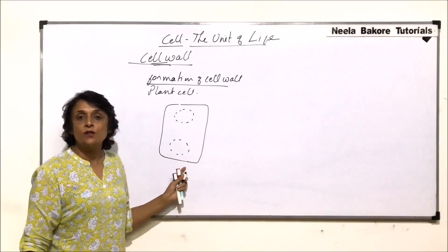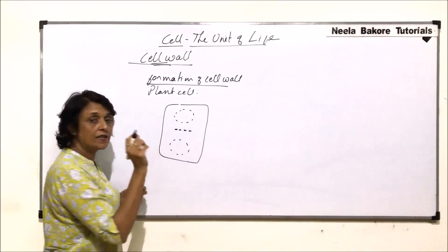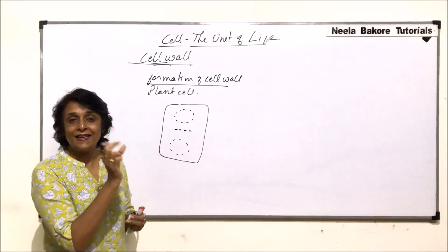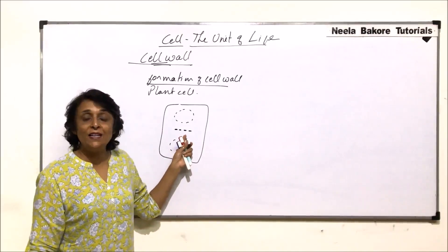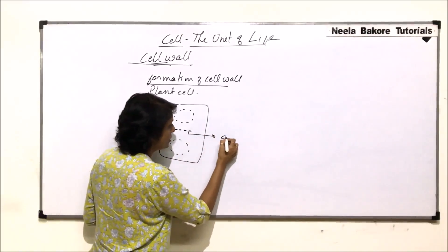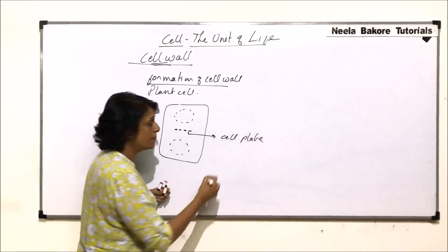After telophase, the two nuclei are formed and now cytokinesis has to start. So at the equatorial plate there are certain fragments which come and align and they make this mitotic plate or cell plate.